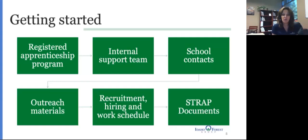Getting started: the key to getting started is planning. It really takes time and effort to make sure that you have a well thought out and successful School to Registered Apprenticeship program. First, you have to have the program registered. For us, our millwright and our heavy equipment technician are the two programs that we take School to Registered Apprenticeship students in.